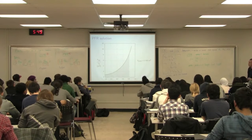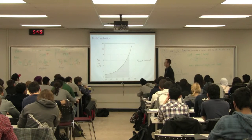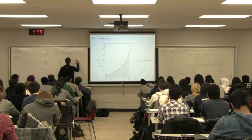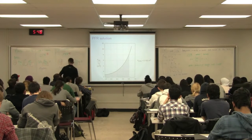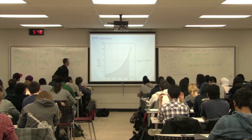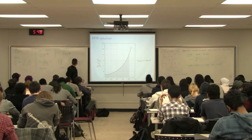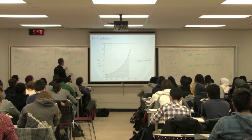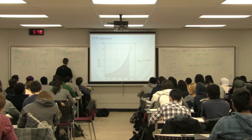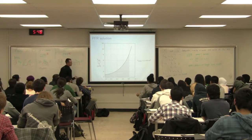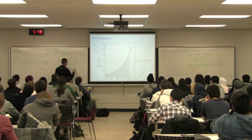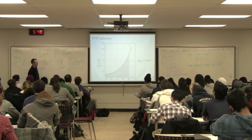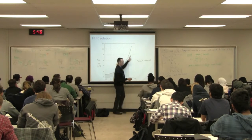For the PFR, the design equation says volume equals FA0 times the integral of dX over minus RA — which is the area under the curve of FA0 over minus RA, integrated from X equals zero on the x-axis up to the final desired conversion. At the inlet I've got X equals zero; at the outlet I've got some final X. To find volume V such that you achieve a desired conversion X, that volume equals the area under the curve.